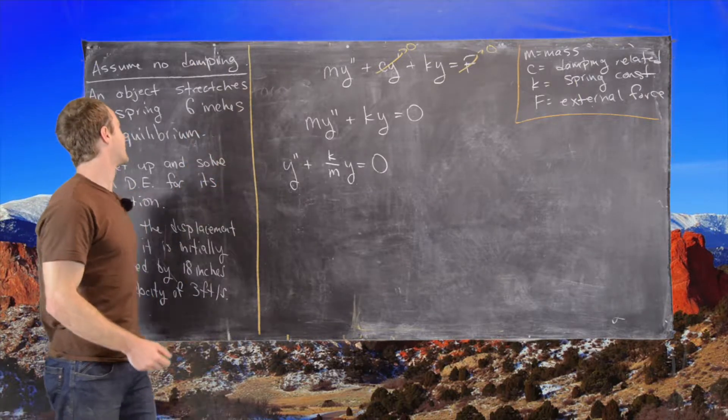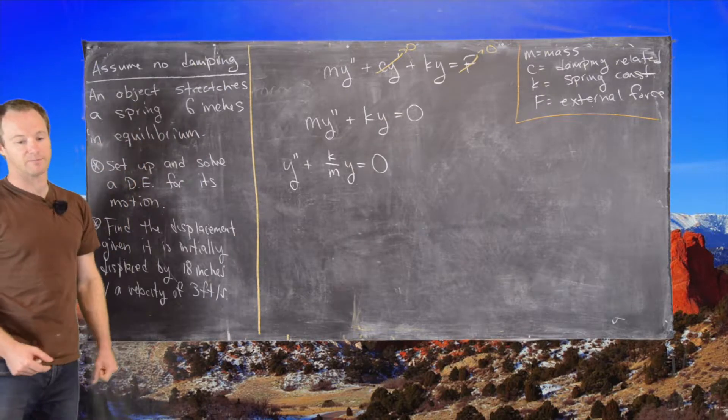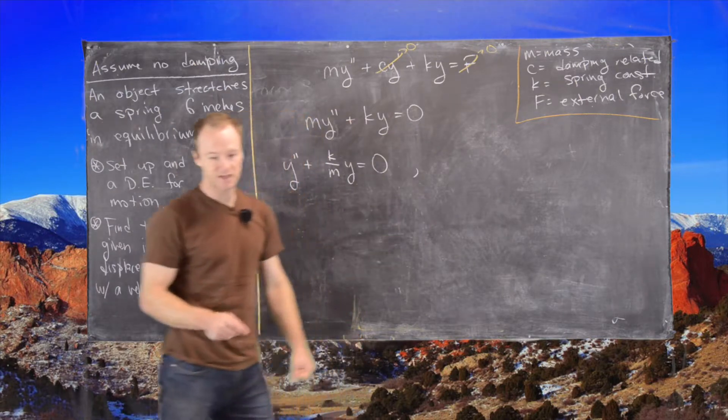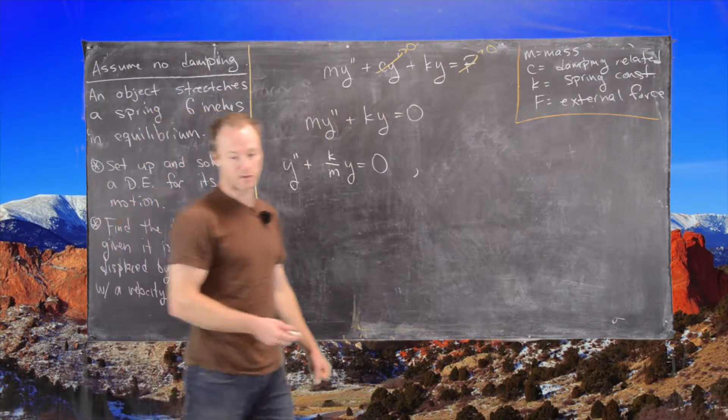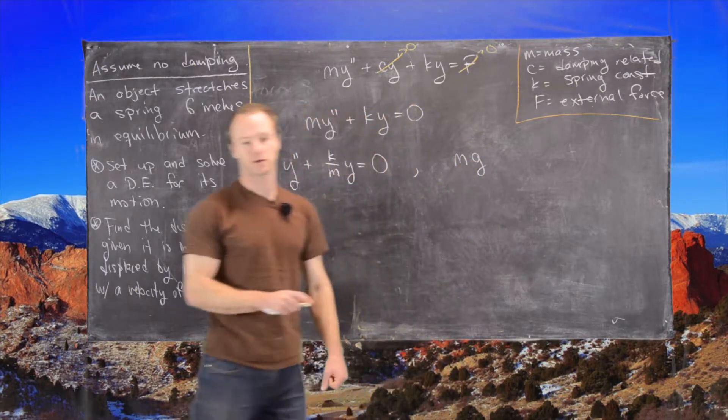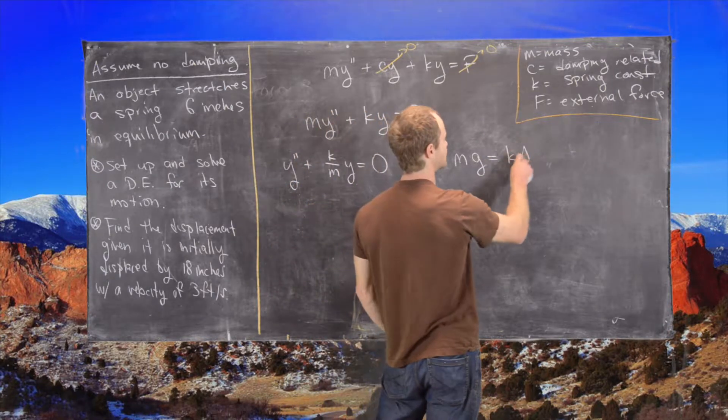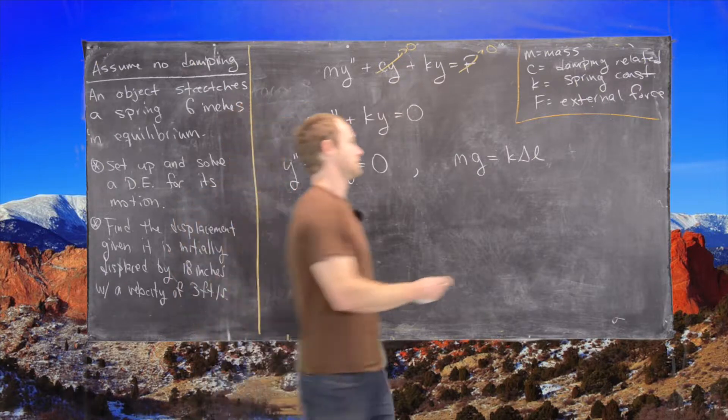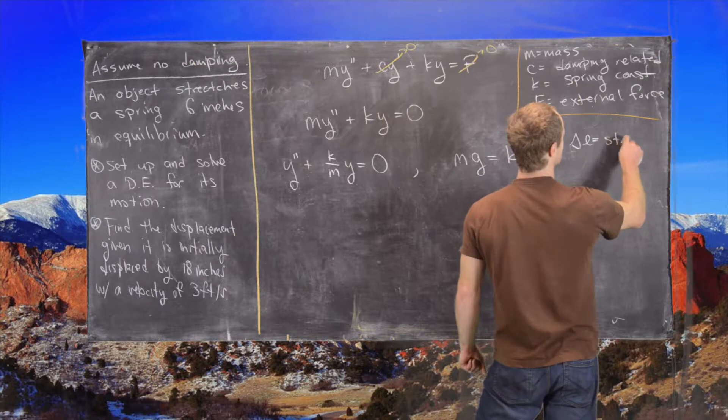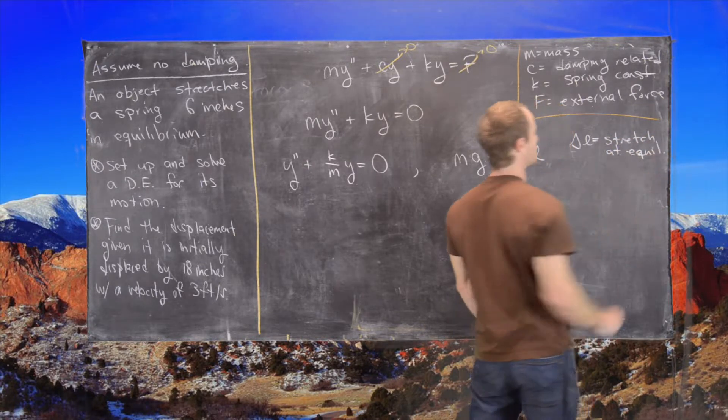But we haven't used this fact that the object stretches the spring six inches in equilibrium. And so we can use that as follows. That tells us that the mass times the force of gravity, we know that is always equal to the spring constant times delta L, where delta L is the stretch at equilibrium.